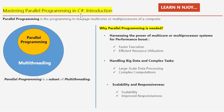Mastering Parallel Programming in C# — Introduction Session. So, what is Parallel Programming? Parallel Programming is programming to leverage multi-cores or multi-processors of a computer. It is a subset of multi-threading. It means that Parallel Programming is a specific approach within the broader concept of multi-threading. If you see the diagram shown here, there are two circles — the bigger circle represents multi-threading and the inner circle represents Parallel Programming.